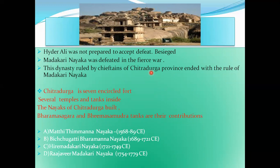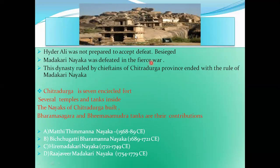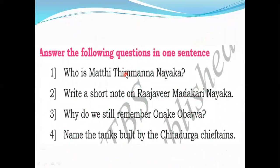The Chitradurga dynasty ended with the rule of Madakari Nayaka. Chitradurga is a seven-encircled fort with tanks and temples inside. The famous tanks built by Chitradurga Nayakas are Baramasagara and Bhima Samudra. The main kings of Chitradurga Nayakas were Mathi Timmanna Nayaka, Bichugatti Baramanna Nayaka, Irei Madakari Nayaka, and Rajavira Madakari Nayaka.